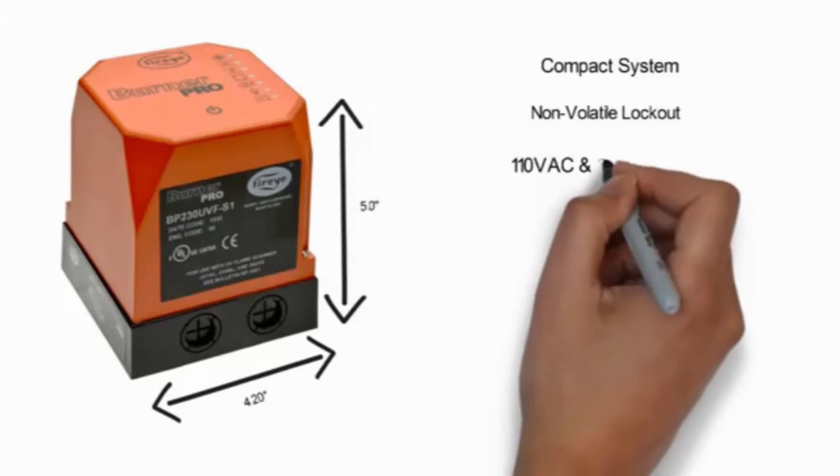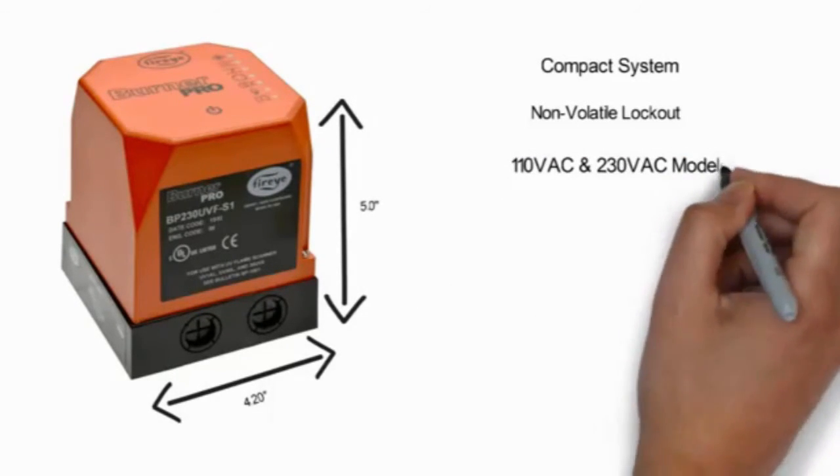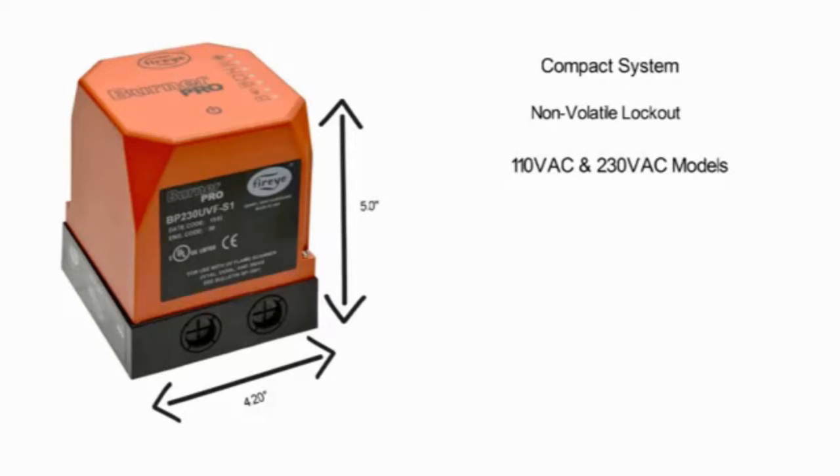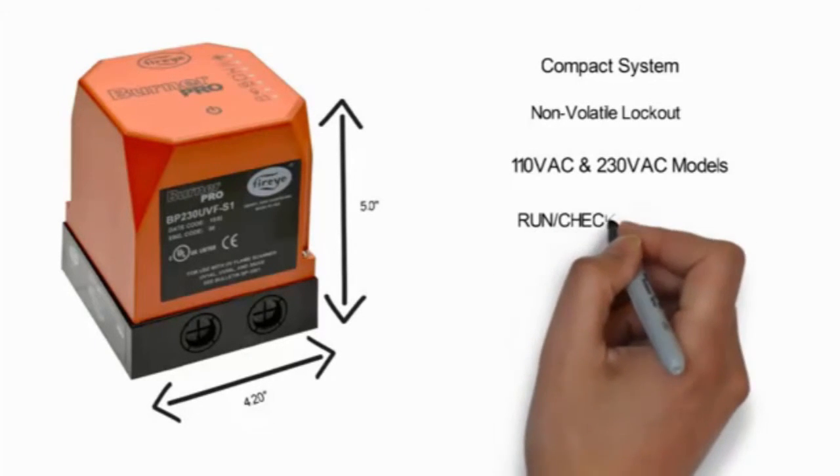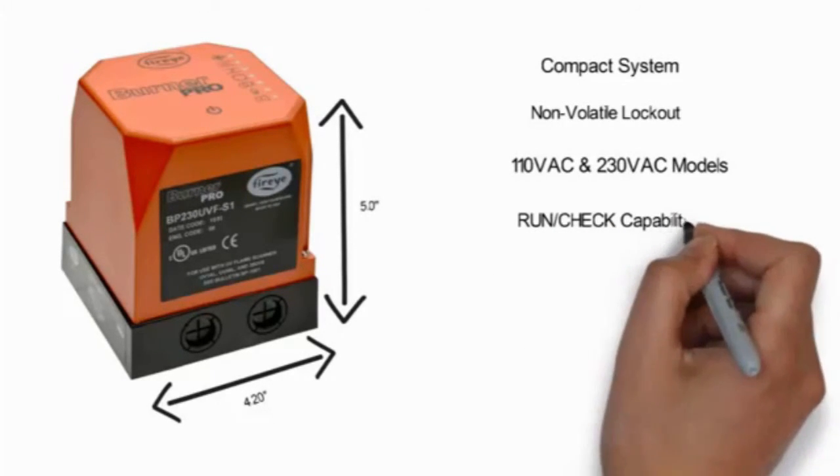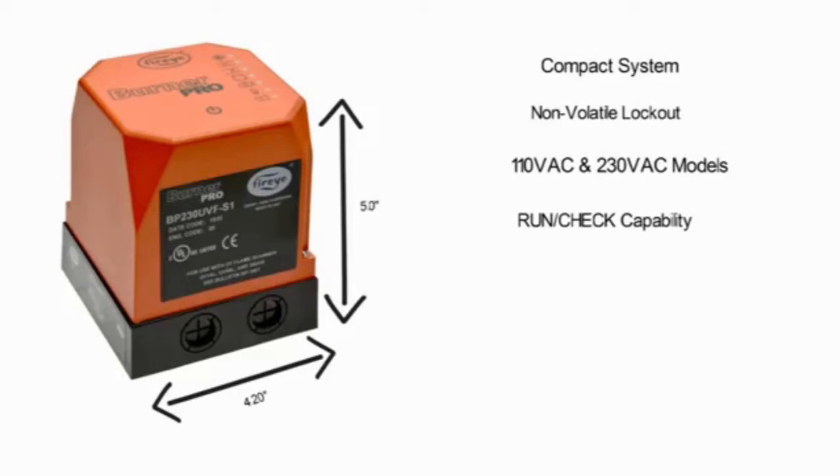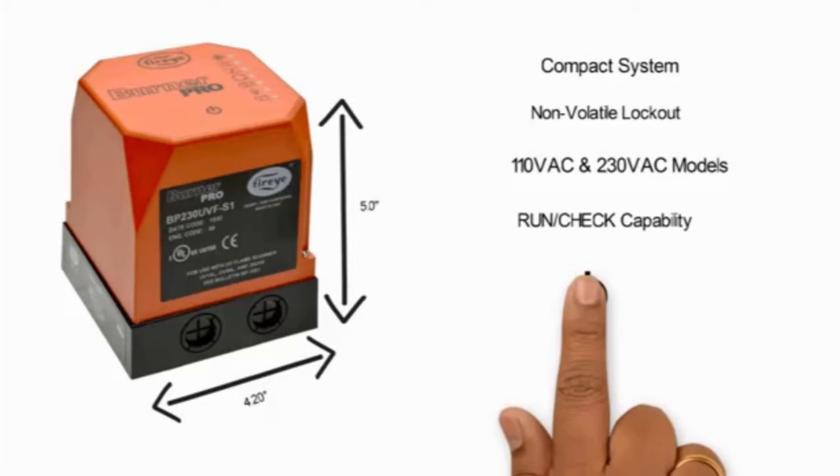110 VAC and 230 VAC models available for greater flexibility in your application. Run check capability allows the system operator to stop the program sequence in the purge, ignition, PTFI and MTFI positions during system commissioning.